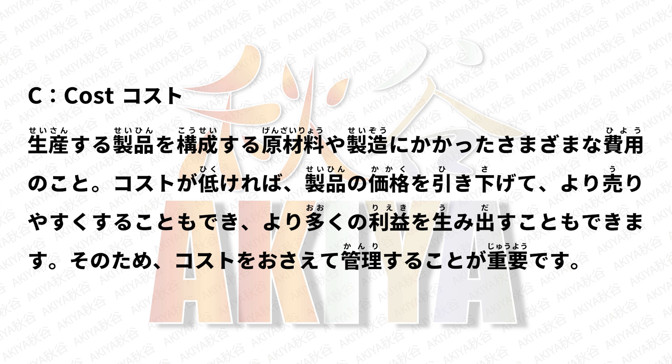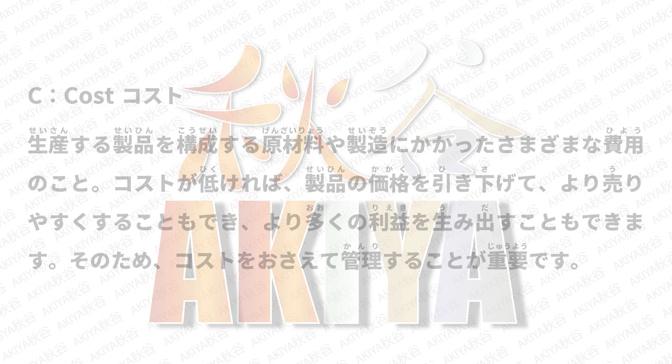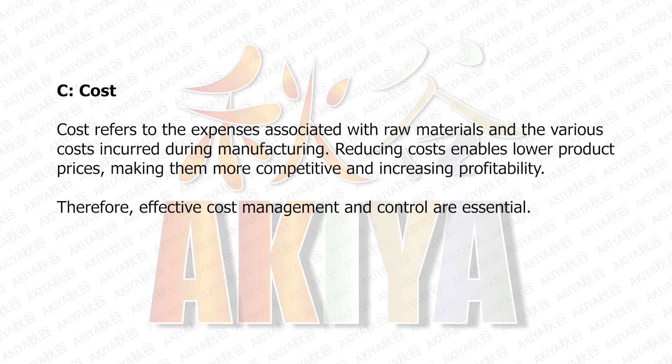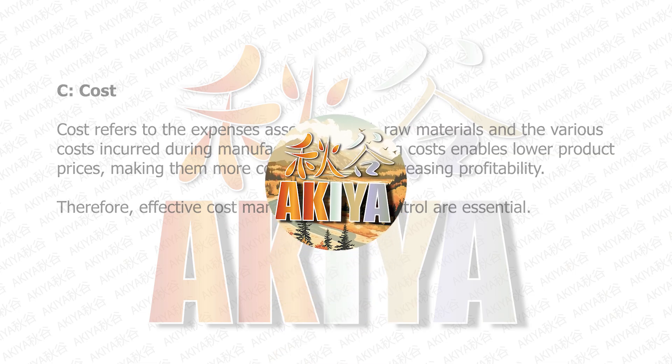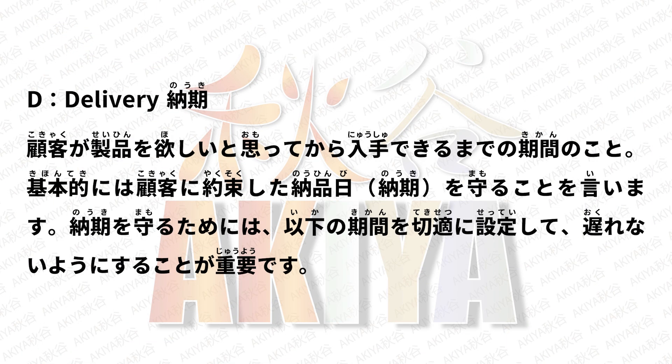C — Cost (コスト): Cost refers to the expenses associated with raw materials and the various costs incurred during manufacturing. Reducing costs enables lower product prices, making them more competitive and increasing profitability. Therefore, effective cost management and control are essential.